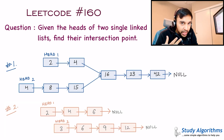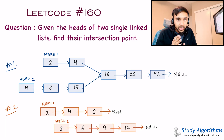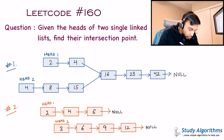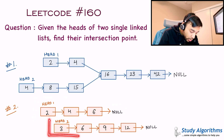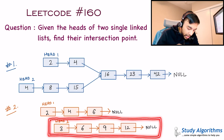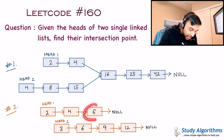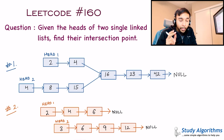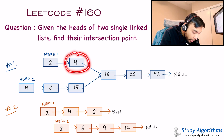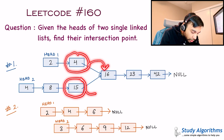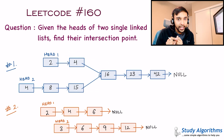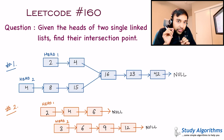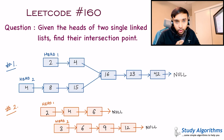There could also be a case where you are given two lists but they do not intersect. In test case number 2, we have head 1 and head 2 as separate lists. Note that even though they have the same value 6, they do not intersect, because in a linked list you are concerned with the memory address. The next of 4 is pointing at the same address as the next of 15, so the address is the same — and hence 16 is the intersection point.